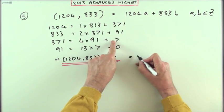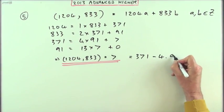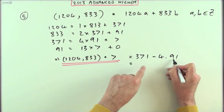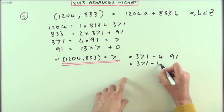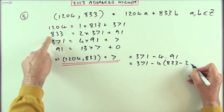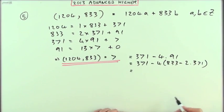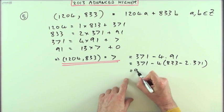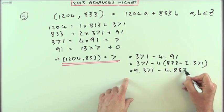It's just a case of using these substitutions to feed it back through. The 7 was 371 minus 4 times 91. I'll use a dot for multiplication. Now I can move up and replace the 91 — I've still got the 371, and the 91 can be replaced by 833 minus 2 times 371. Now I've got 9 lots of 371 minus 4 lots of 833.